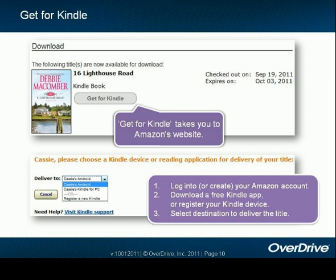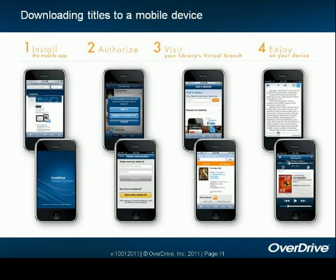Some of you might be curious how this works for the Kindle. Instead of the traditional download button you'll see with our other titles, you'll see 'Get for Kindle.' This will take you out to Amazon's website. From there, you'll log into your Amazon account, download a free Kindle app or register your Kindle device, and then select the destination you wish to deliver the title — for example, delivering it to an Android device.